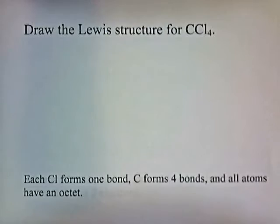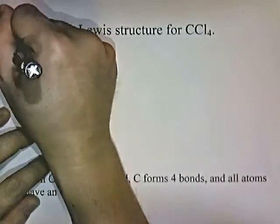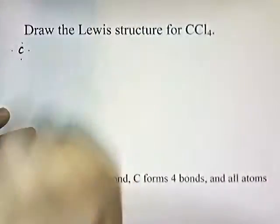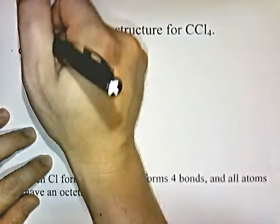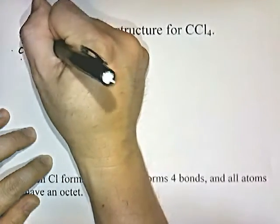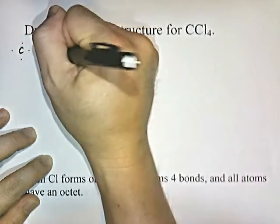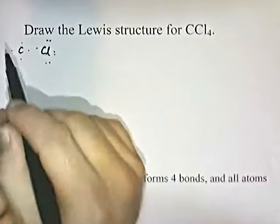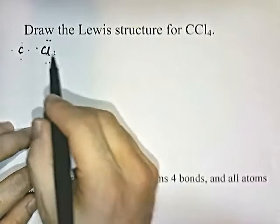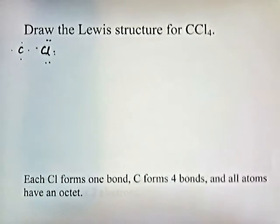Let's draw the Lewis dot structure for CCl₄. First, draw a dot diagram to find the unpaired electrons on each atom. Chlorine is in group 7 and has one unpaired electron. Carbon has four unpaired electrons. So chlorine will form one bond and carbon will form four bonds. We'll use that information to check our work at the end.